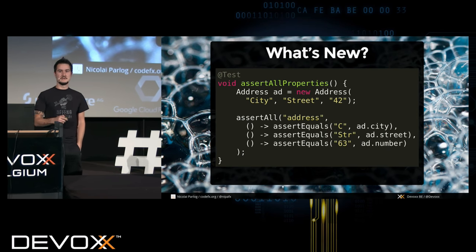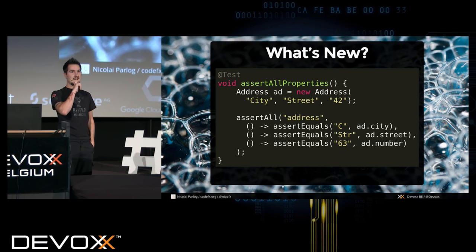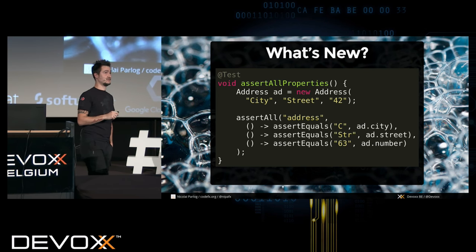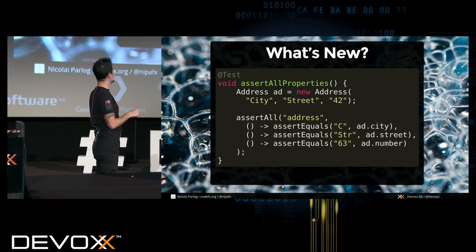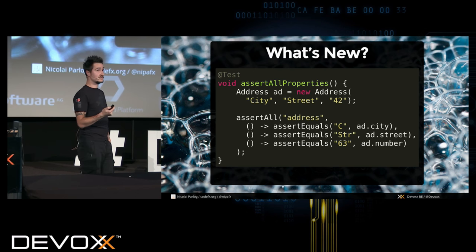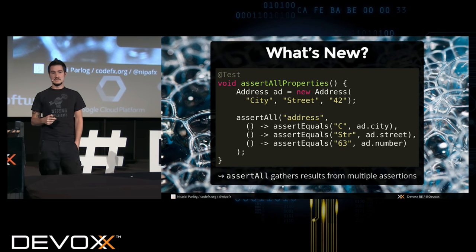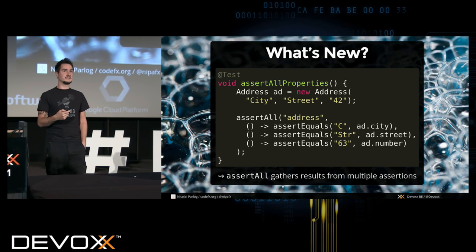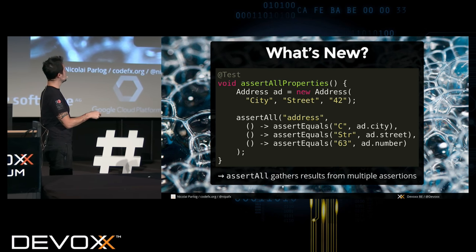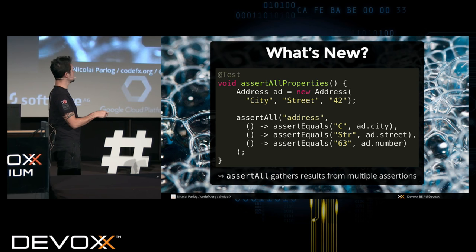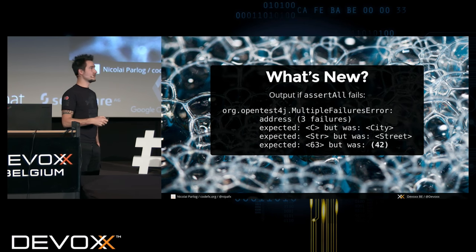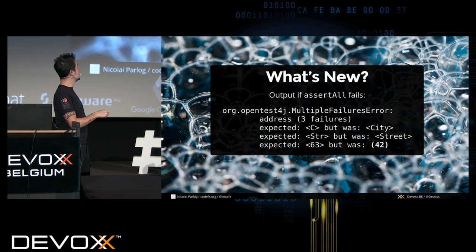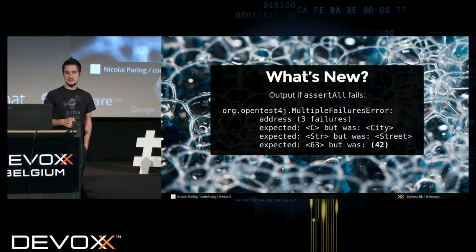What's new here? AssertAll. So I can hand it a couple of lambdas which do their own assertions, and it would execute all of them and give me all the results. Before, if I had just done these assertions without the lambdas, the first one would already fail and I would never see the other ones. With assertAll, you can see all the results, which comes in handy in many situations.